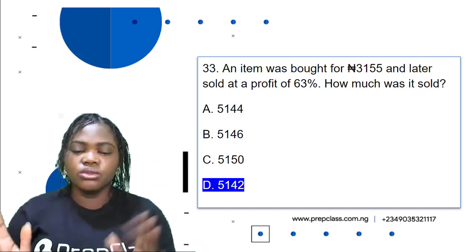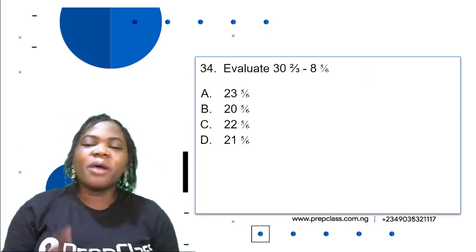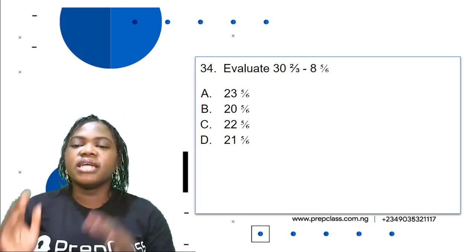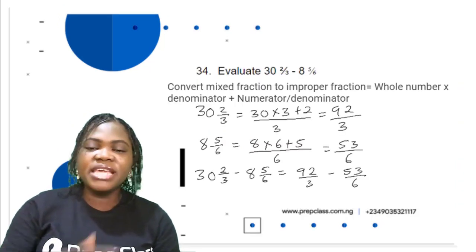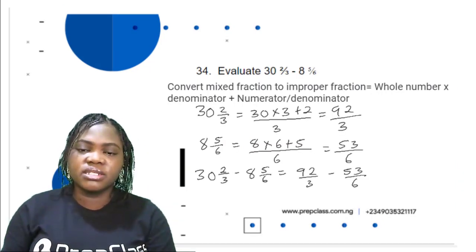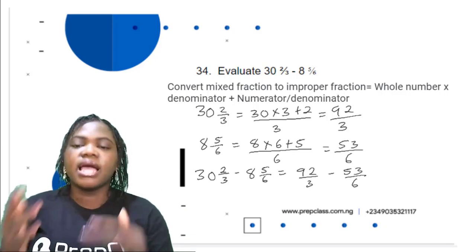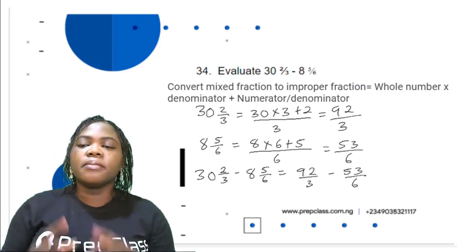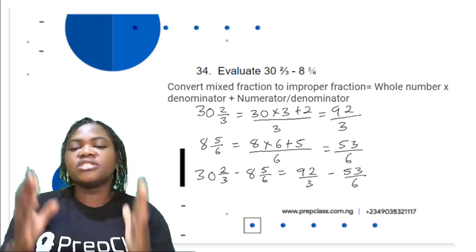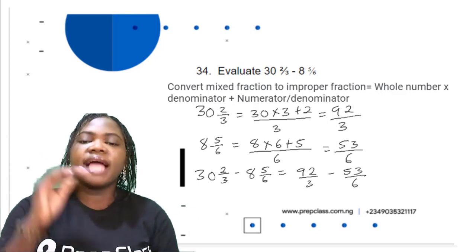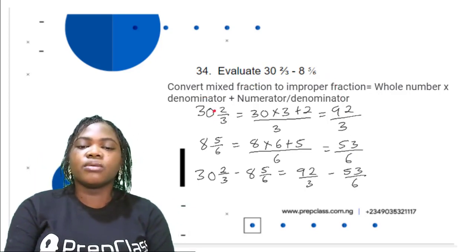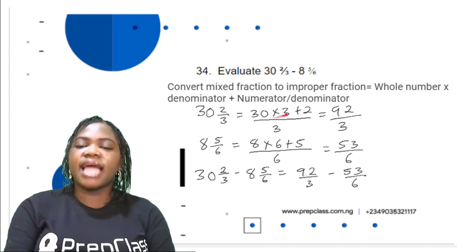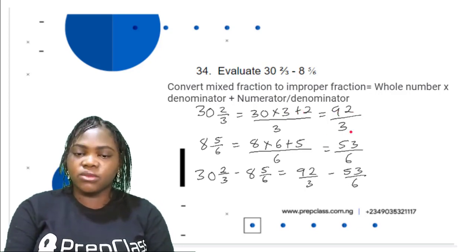Question 34: Evaluate 30 and 2/3 minus 8 and 5/6. These are mixed fractions. Convert them to improper fractions by multiplying the whole number by the denominator, adding the numerator, then dividing by the denominator. For 30 and 2/3: (30 × 3 + 2) ÷ 3 = 92/3.